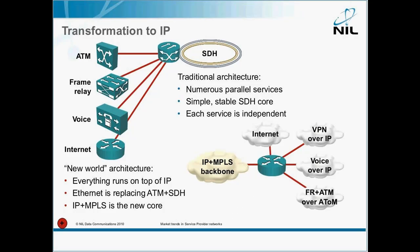All the traditional services are now offered over this IP core — with Voice over IP and VPNs over IP, which could be Layer 2 or Layer 3 VPNs. Some service providers are even offering Frame Relay or ATM services on top of IP, because it's easier and cheaper to offer these services over IP than maintaining a separate infrastructure.